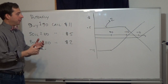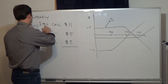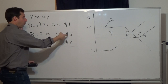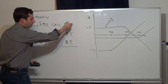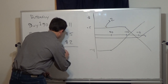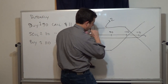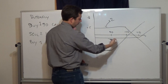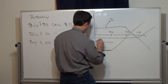To draw the butterfly, note that we sell two 100-strike calls for $10 total and buy the 90- and 110-calls for $13 total. Net cost is $3. So for any stock price below $90, all options expire worthless and we simply have a loss of $3.